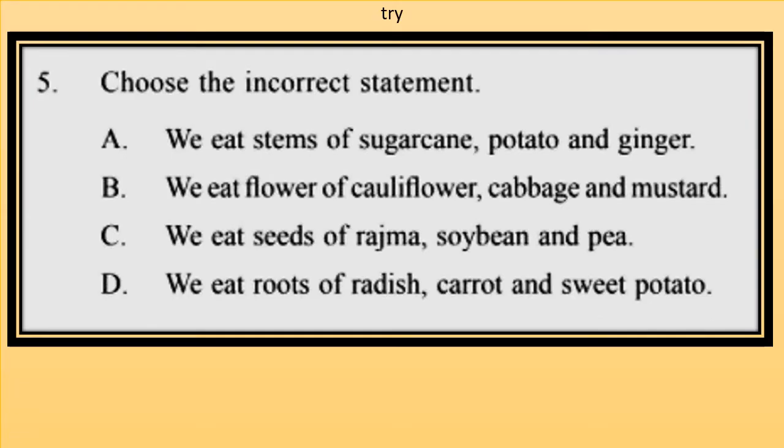Question 5. Choose the incorrect statement. A. We eat stems of sugar cane, potato and ginger. B. We eat flour of cauliflower, cabbage and mustard. C. We eat seeds of rajma, soybean and pea. D. We eat roots of radish, carrot and sweet potato. Science questions are generally asked in Class 5 IGQ — be prepared for that.